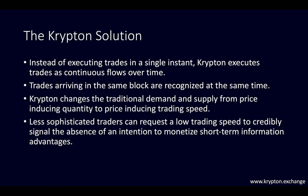To solve this, Krypton executes trades as continuous flows over time instead of implementing trades in a single instant. Trades that arrive in the same block are recognized as having started at the same point in time, regardless of transaction sequencing. Krypton changes the traditional perspective of demand and supply from price-inducing quantity to price-inducing trading speed, meaning quantity per unit of time.